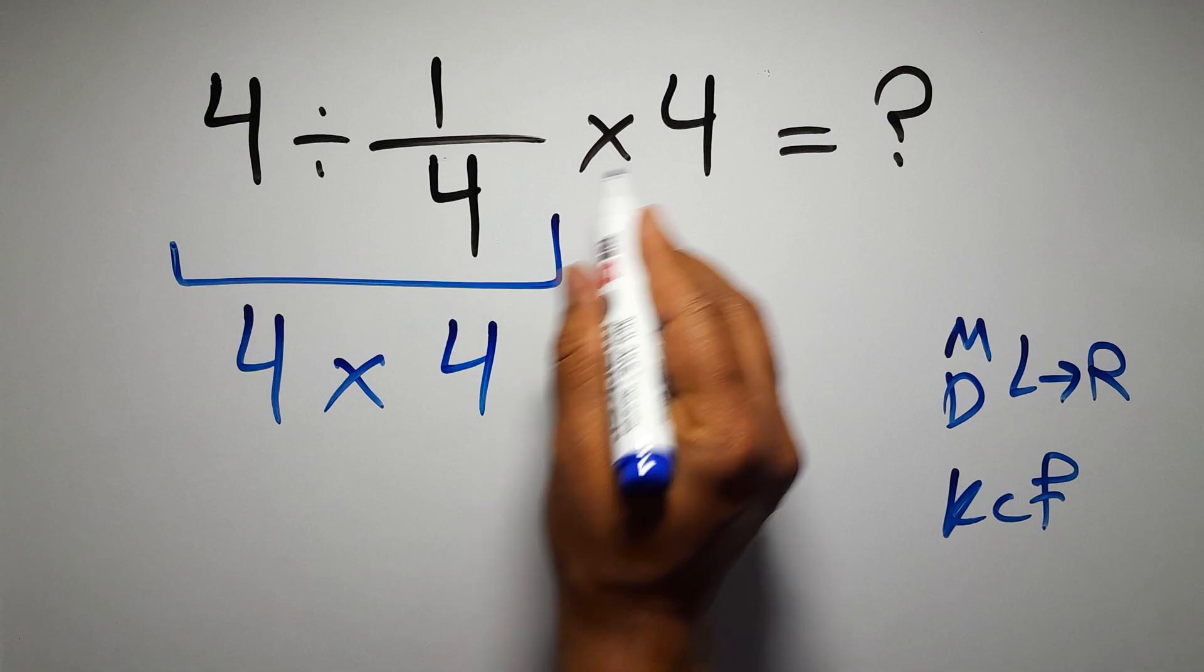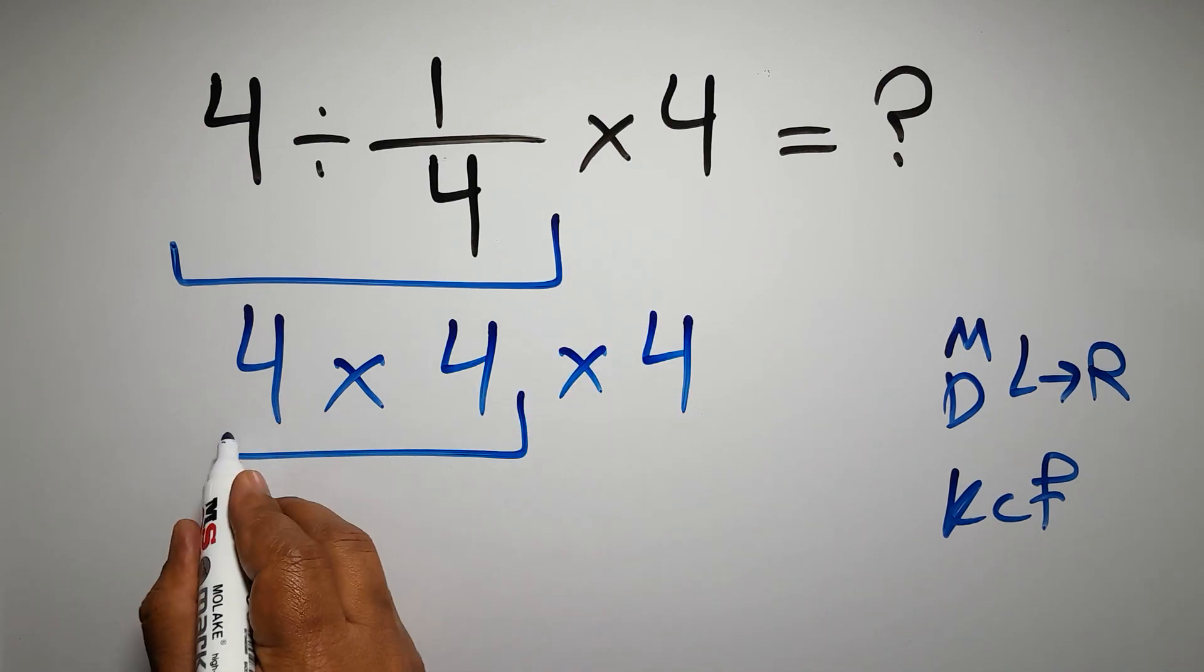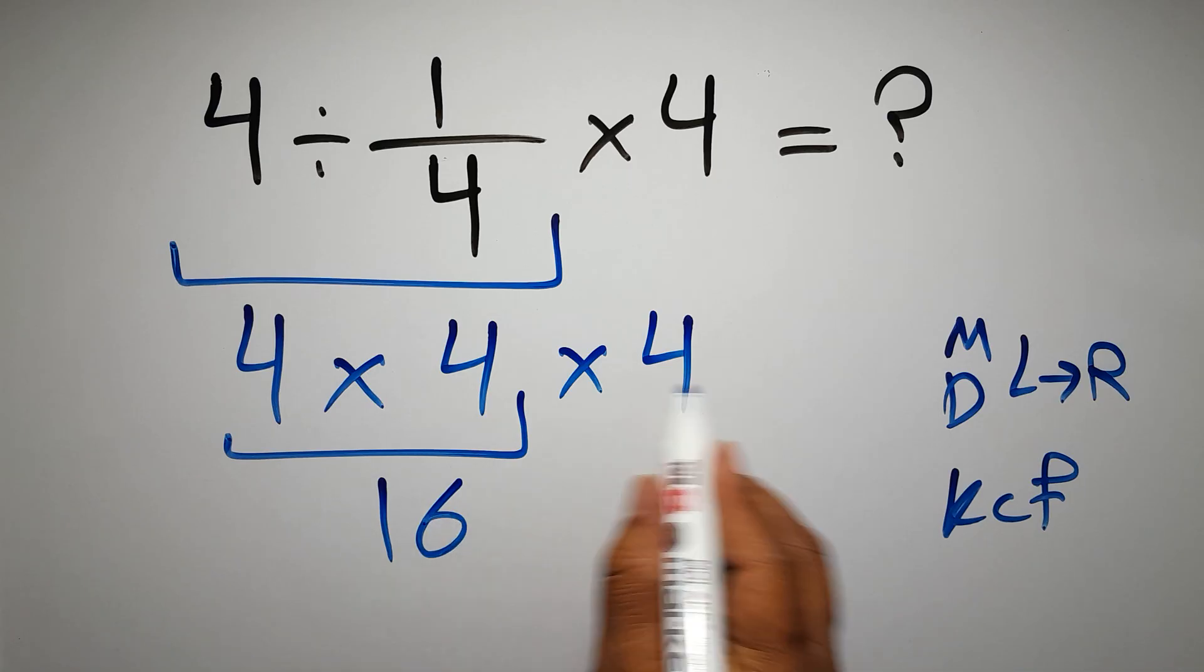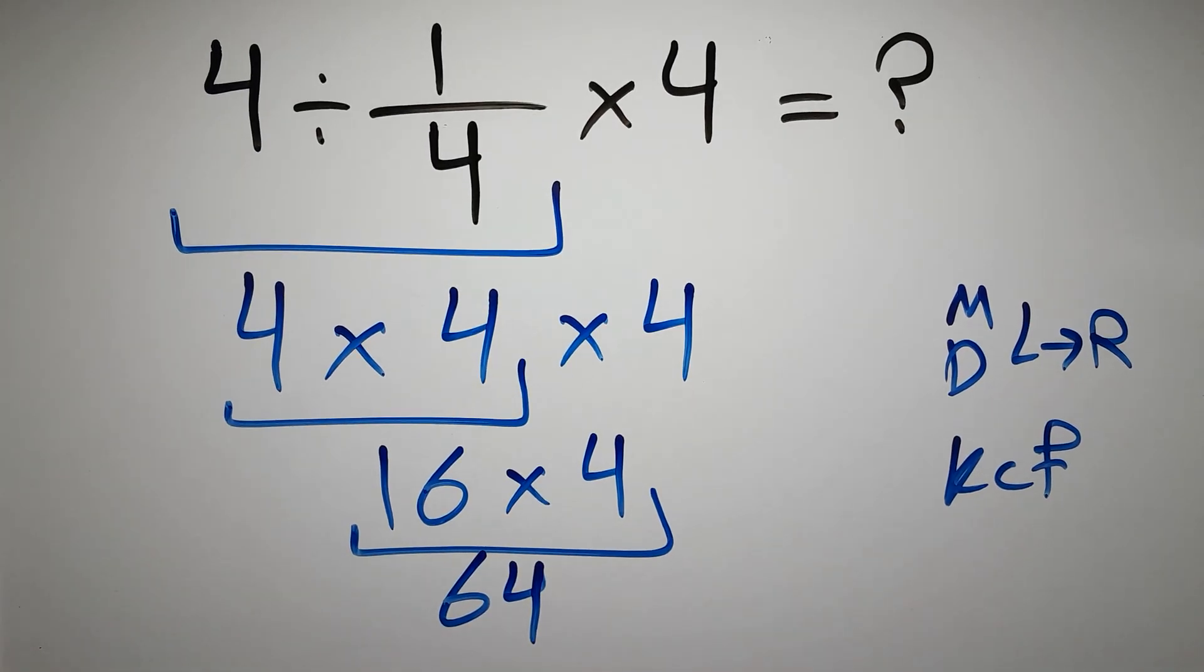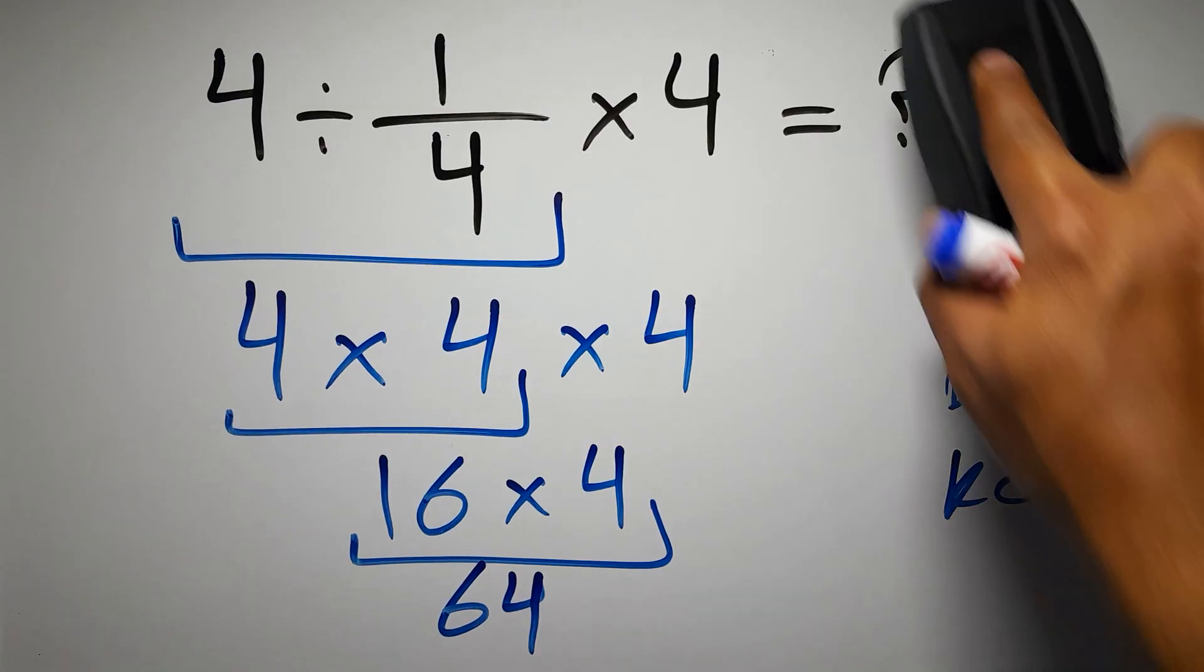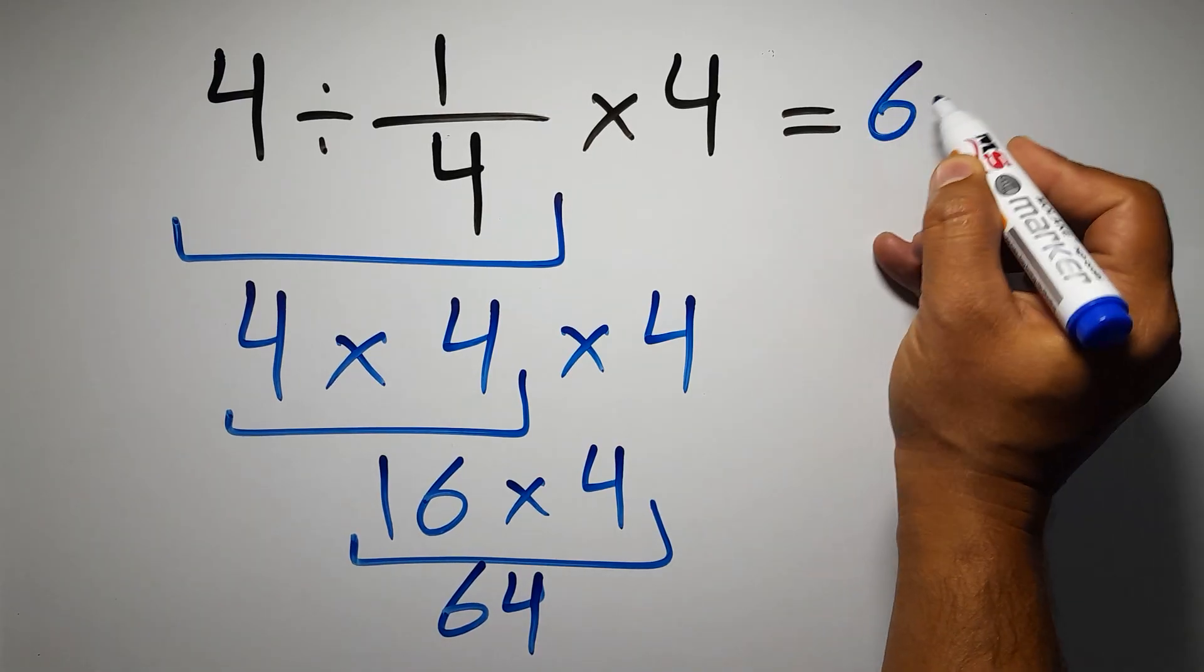And again here we have times 4. 4 times 4 is just 16, and 16 times 4 gives us 64. And this is our final answer to this problem. The correct answer is 64.